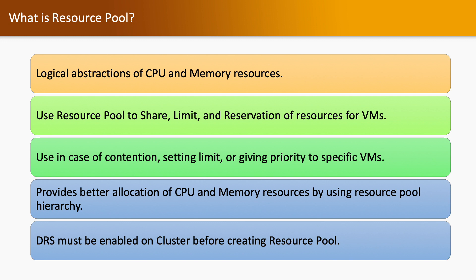Although these things can also be done through individual virtual machines, the management overhead will be high if we go one by one. So to configure share, limit, and reservation on multiple virtual machines, we create a resource pool and put all those virtual machines in it, so that whatever allocation we do on the resource pool will be applied to all virtual machines inside. You must have DRS enabled on the cluster before creating a resource pool.